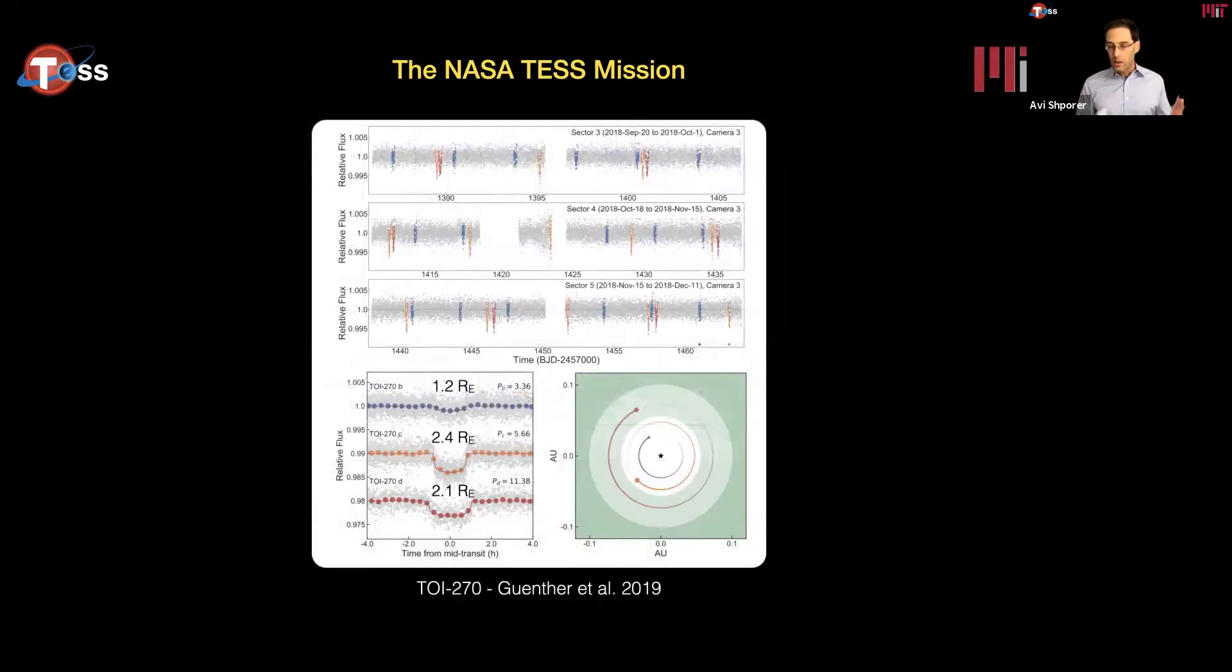Here is another exciting example. This is a system of three small planets, all of them smaller than two and a half times the size of the Earth, orbiting the same star. It is not uncommon for small planets, especially orbiting small stars, to come in families, to have siblings, meaning more planets in the same system.